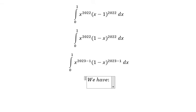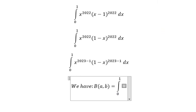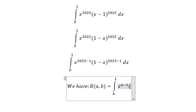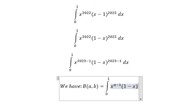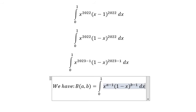The beta function B(a,b) equals the integral from 0 to 1 of x to the power of a minus 1, times 1 minus x to the power of b minus 1, dx. This is the formula.